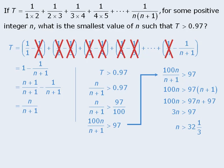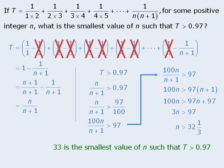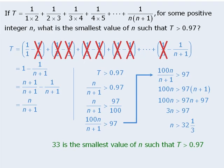At this point we have taken the original question, what is the smallest value of n such that T is greater than 0.97, and we have rewritten it as, what is the smallest value of n such that n is greater than 32 and 1 third. Since 33 is the smallest value of n such that n is greater than 32 and 1 third, we can say that 33 is the smallest value of n such that T is greater than 0.97.